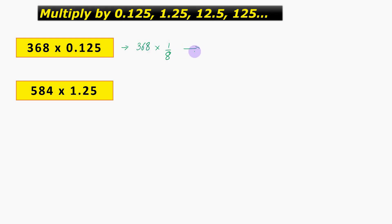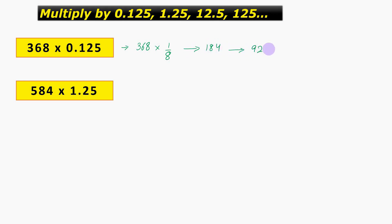The method of doing this is we divide 368 by 2 first, thereby getting 184. Then again, we divide 184 by 2, thereby getting 92, and this process has to be repeated one more time. So, we divide 92 by 2, thereby getting 46. And hence, this is the answer.